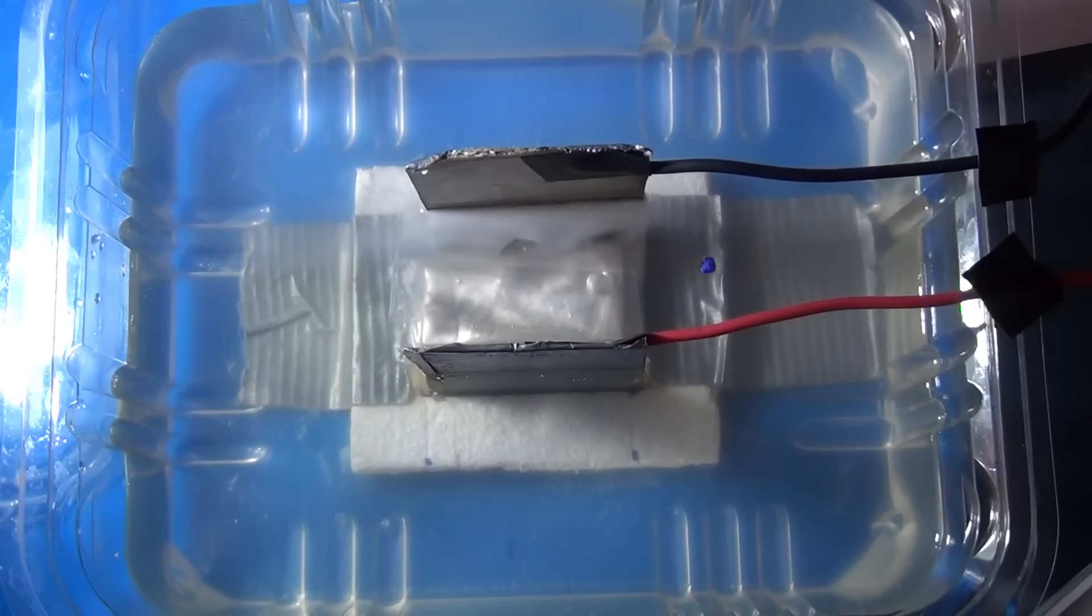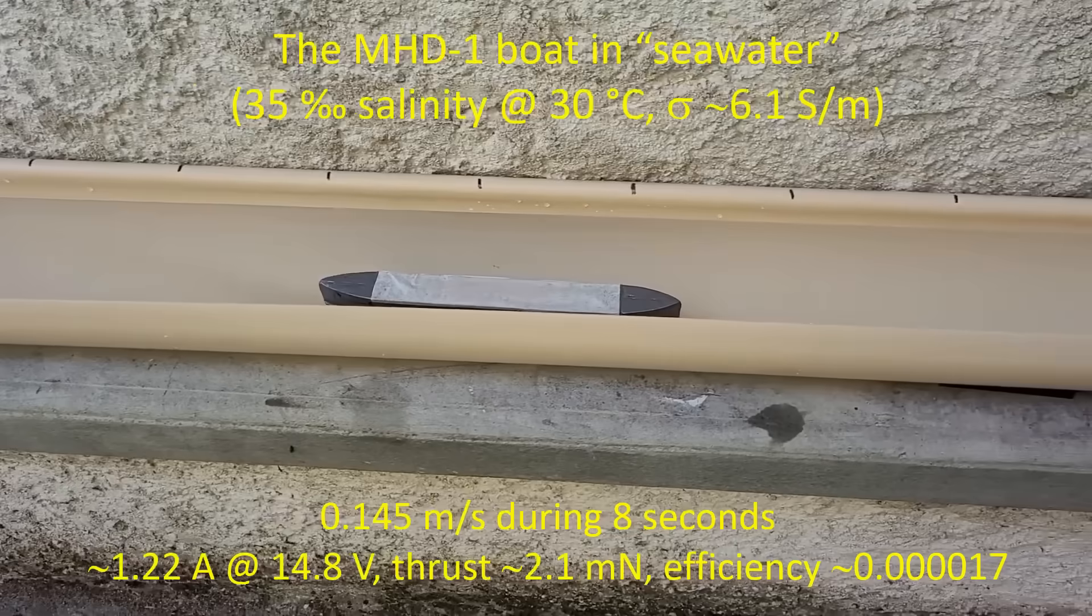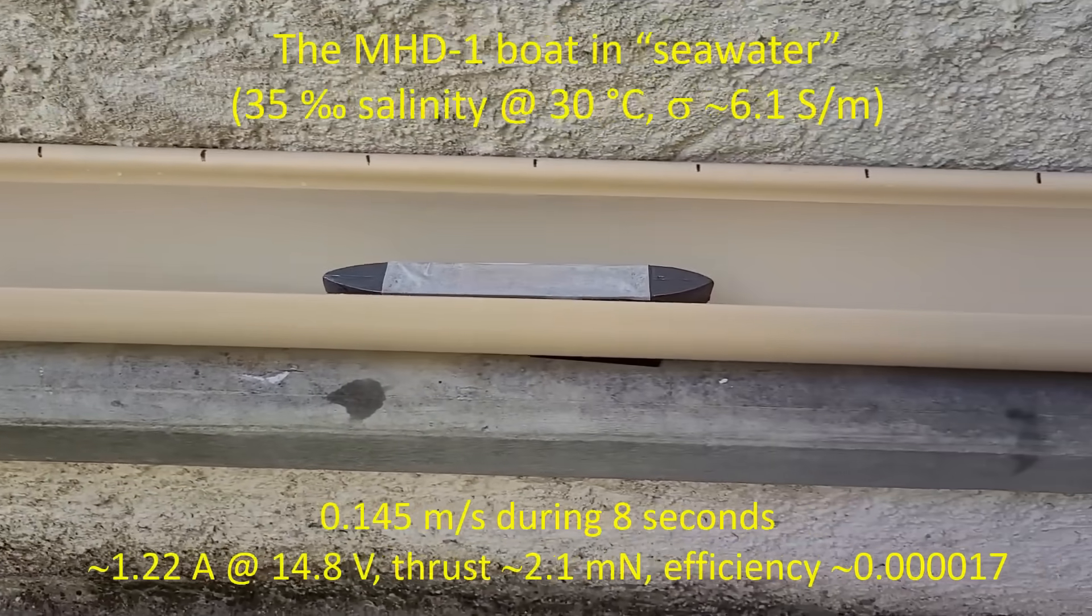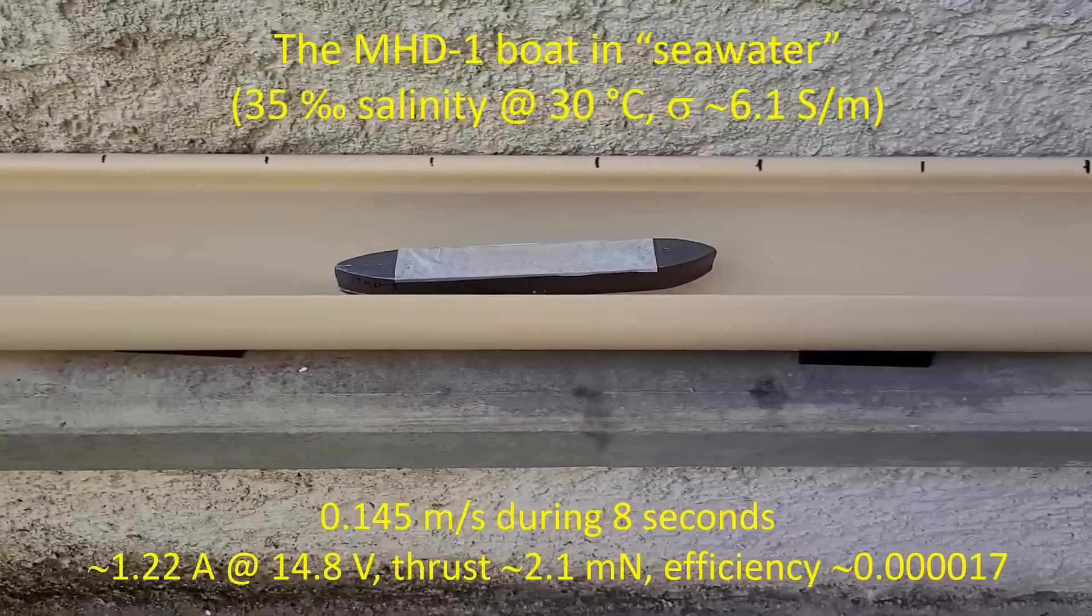The Seawater MHD thruster also has a very similar design. It has an intake, two electrodes, and this induces a current in a perpendicular magnetic field and creates flow. However, we are talking about seawater as the medium instead of liquid metal. And now the game has completely changed.